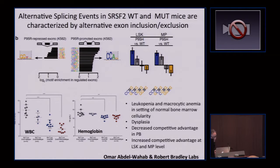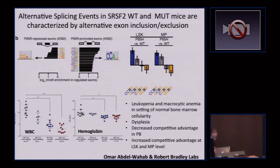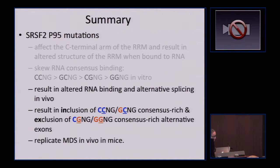What is particularly notable — since we always ask whether studying this mutation is relevant to MDS — is that CC and G-rich exons are included in primary mouse cells while GG and G-rich exons are predominantly excluded. To summarize: SRSF2 mutations result in altered RNA binding and alternative splicing in vivo, inclusion of CC and G or GC and G consensus-rich exons, exclusion of CG and G or GG and G consensus-rich alternative exons, and these mutations replicate MDS in vivo in mice.